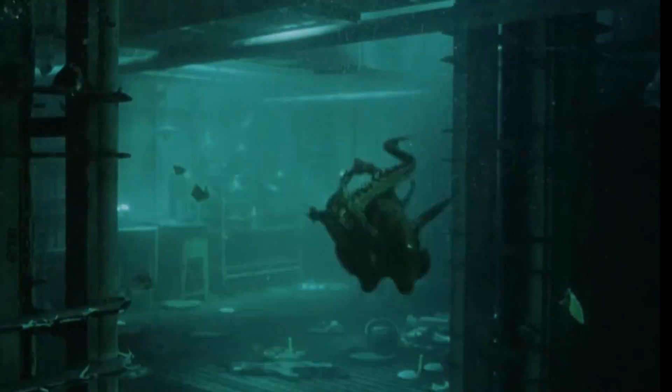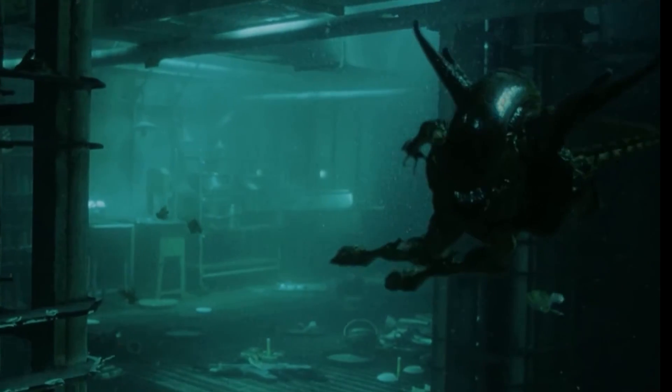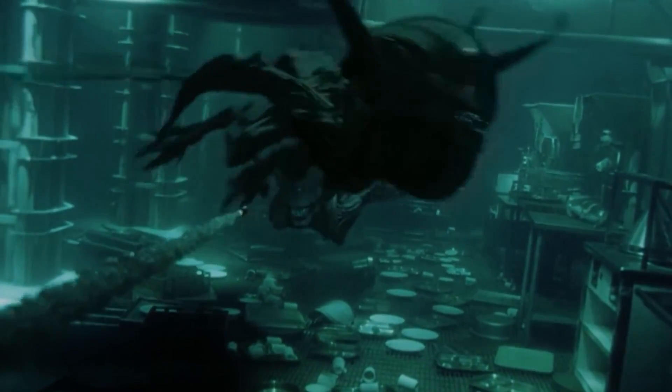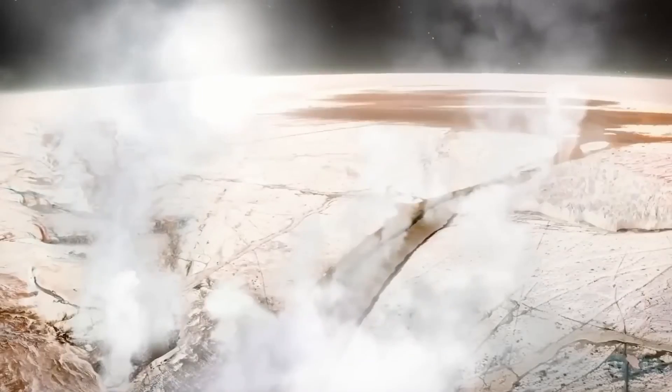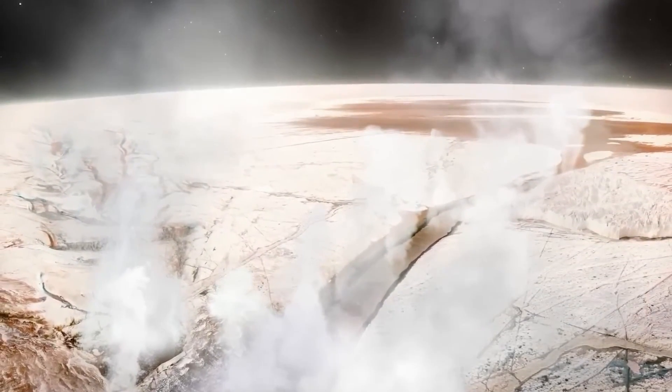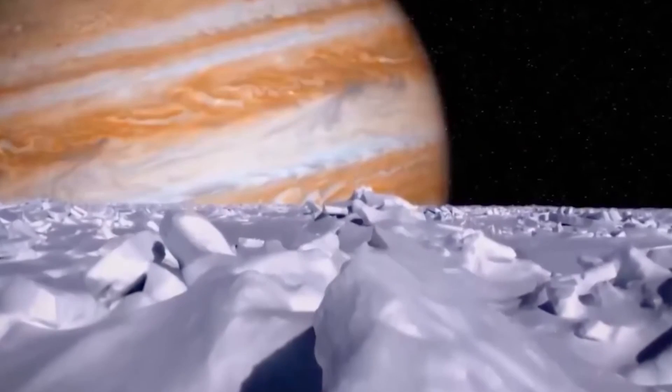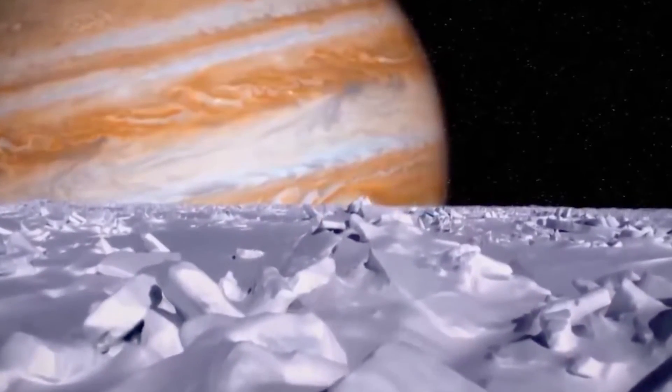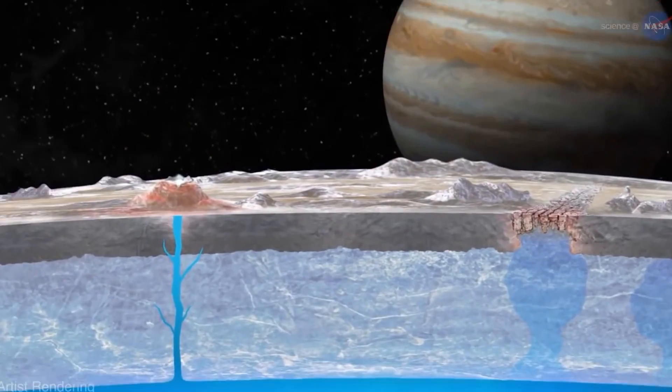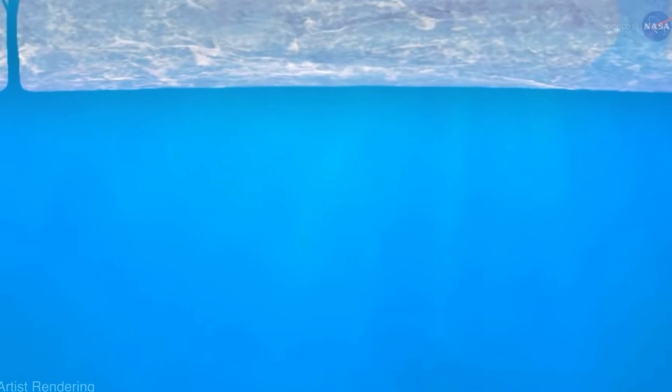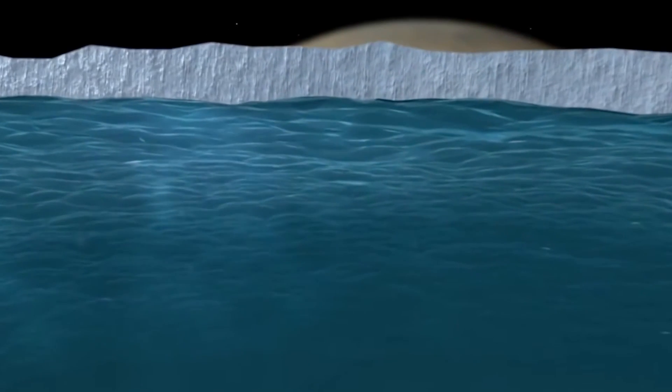I'm imagining some freaky alien fish with two heads or something. Anyway, finding this carbon dioxide on Europa's surface is a big deal. Carbon is essential for life as we know it. It's the building block for everything alive on our planet. So discovering carbon on Europa suggests its hidden ocean could have the right chemistry for supporting life.